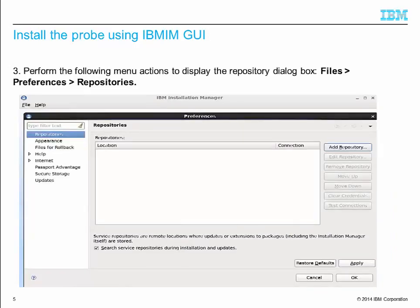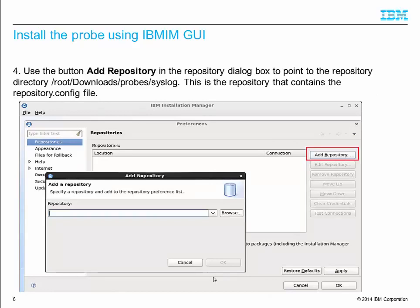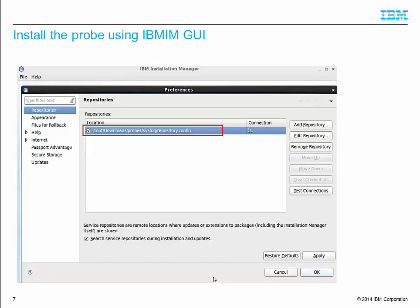I will then click File > Preferences. It will bring up the repository dialog box. Click Add Repository on the right-hand side. It will let me select the repository directory. I need to select the directory root/downloads/probes/syslog, which contains the repository.config file. After I click OK, the repository is added.